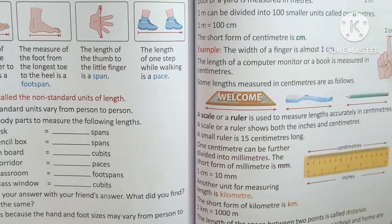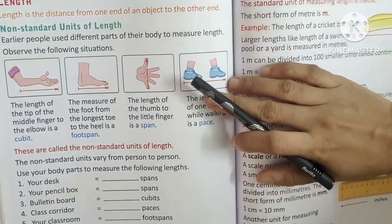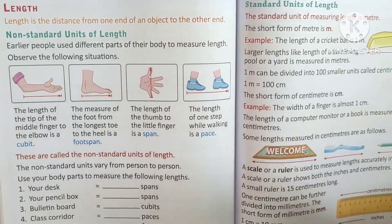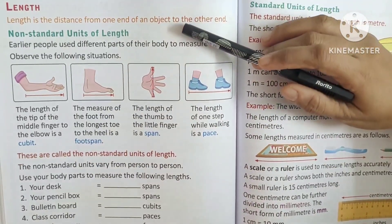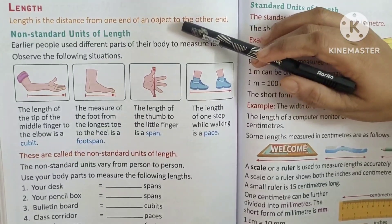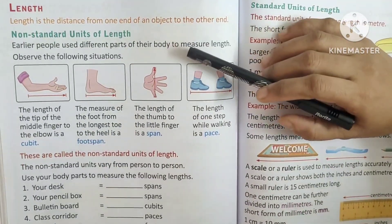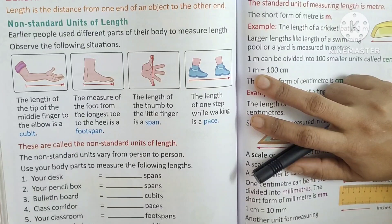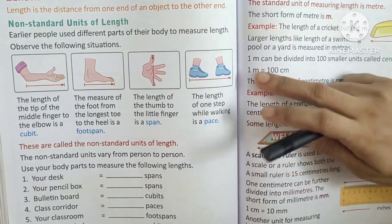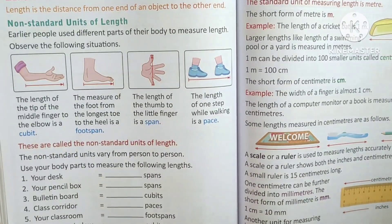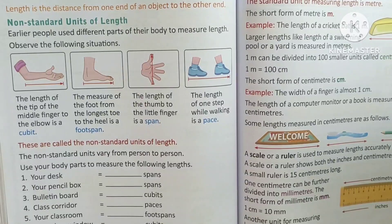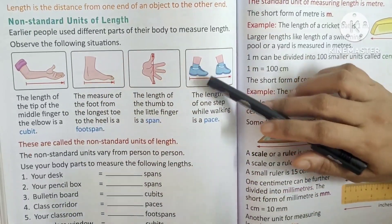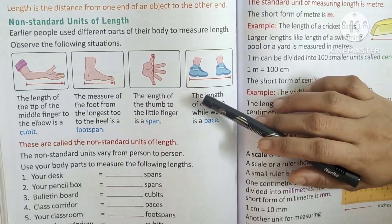Now we come to length. Length means the distance from one end of an object to the other end. There are two methods of measuring length. One is non-standard units of length — we use body parts like hands, feet, and fingers to measure length.